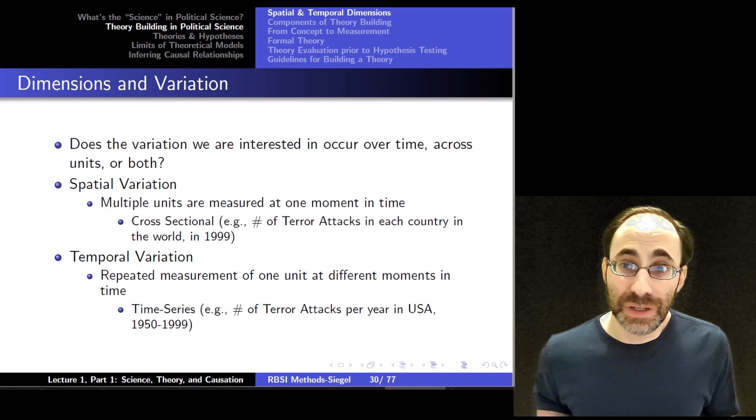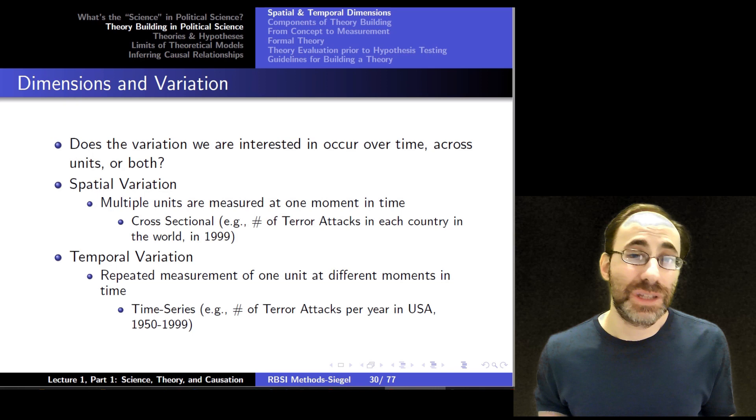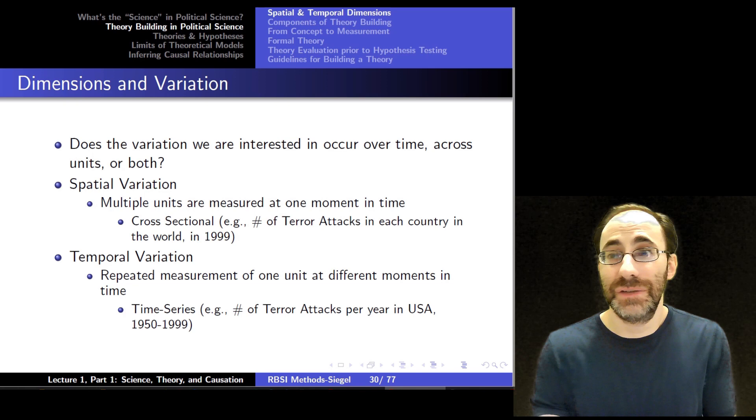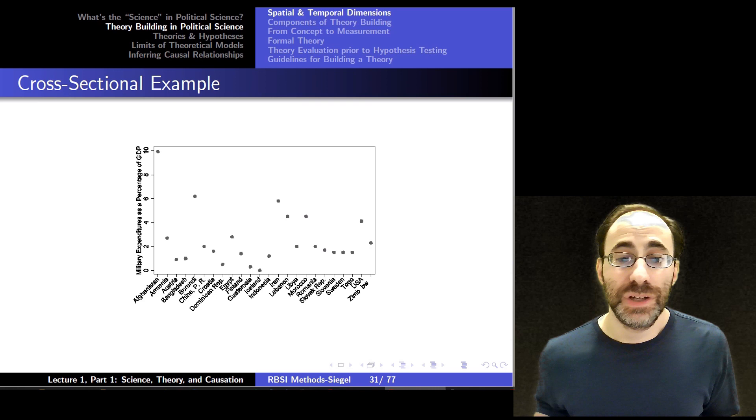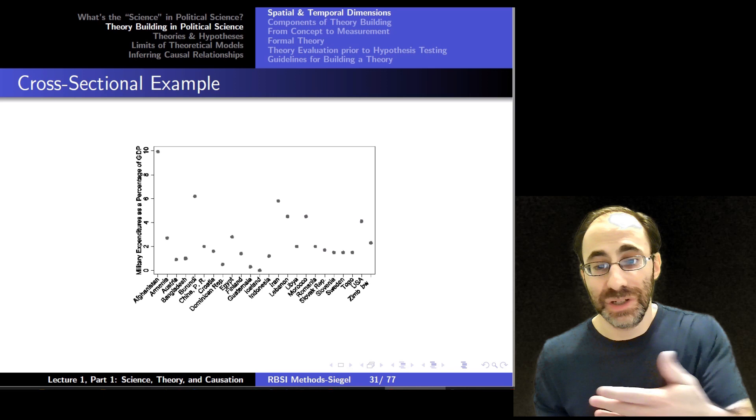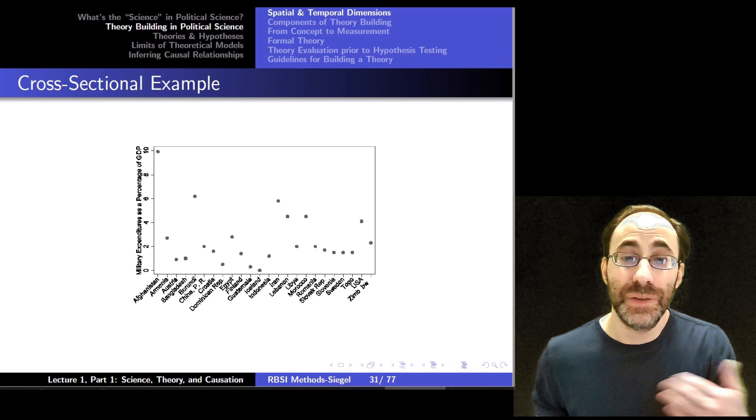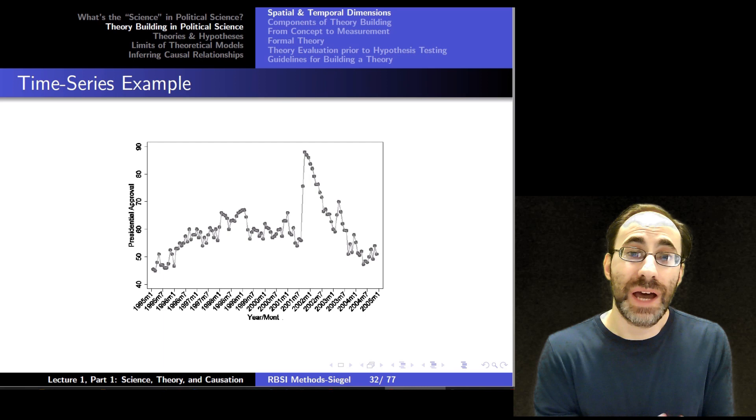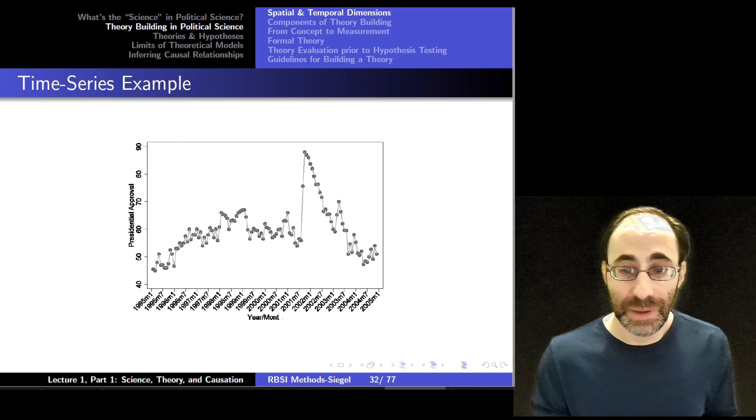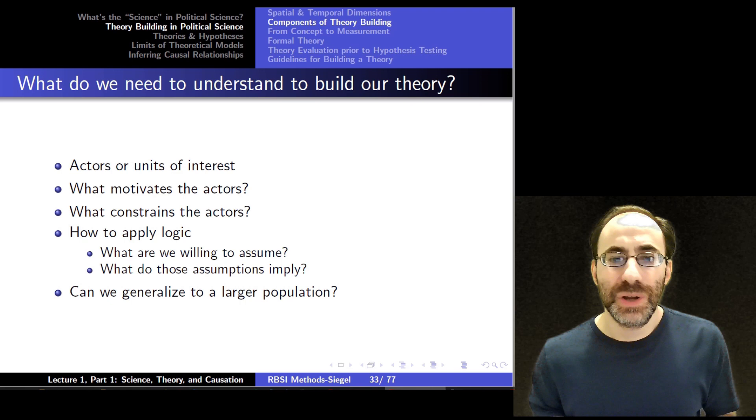An example here might be the number of terror attacks that the USA has experienced between 1950 and 1999. That's a series of data for a single country across time. Another example might be the military expenditures as a percentage of GDP. This is a cross-sectional example, because you're looking at the amount of military expenditures for each country in the world across time. Here's a time series example. This is presidential approval in the U.S., so it's within a single unit, a single country, but it's a time series of approval ratings for the president between 1995 and 2005.